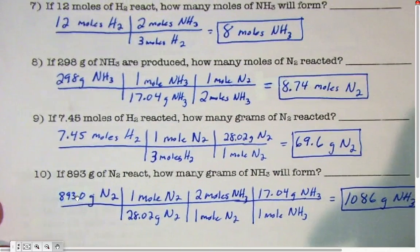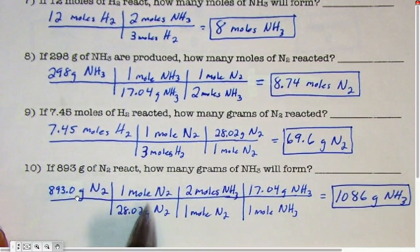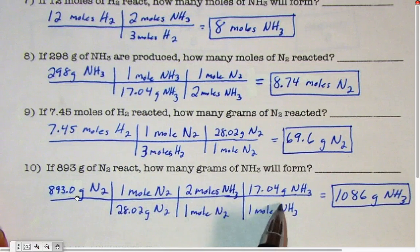It's even possible to do what's shown in number 10, where you start with the mass of one chemical, change it into moles of that chemical, change it into moles of the new chemical, and then change it into the mass of the new chemical.